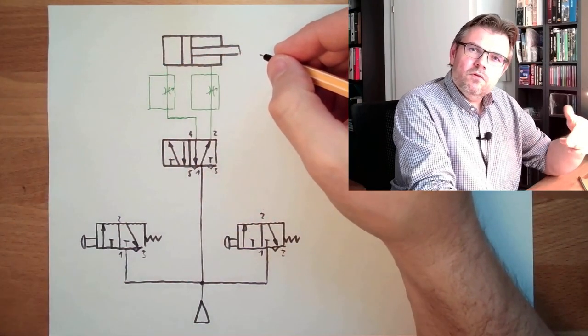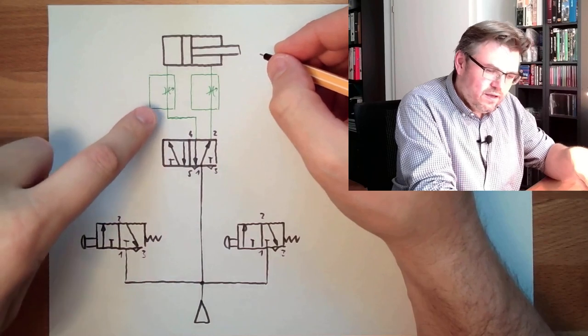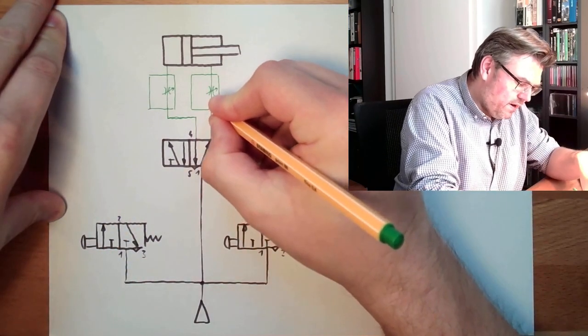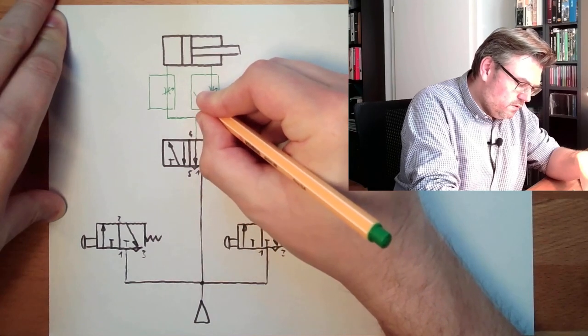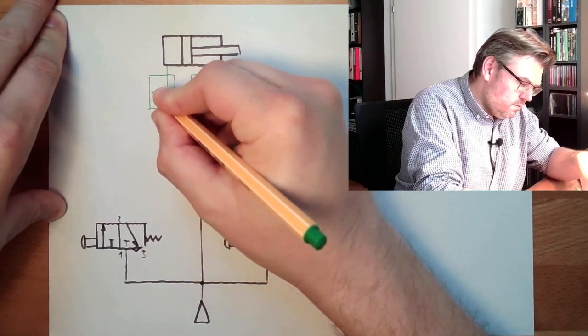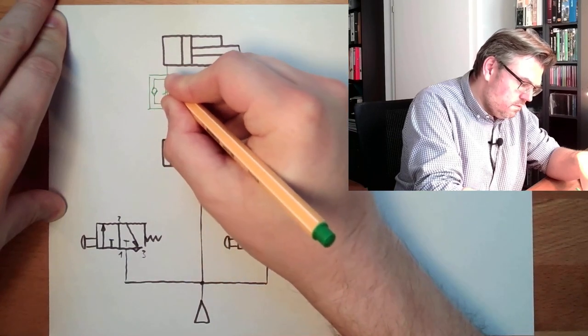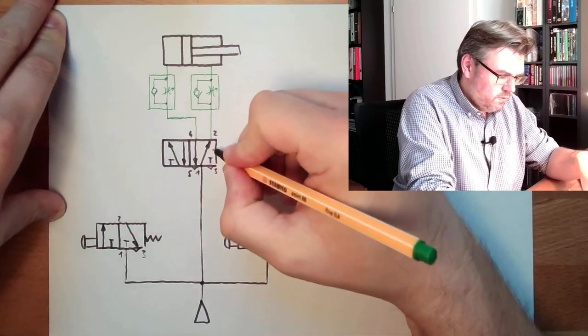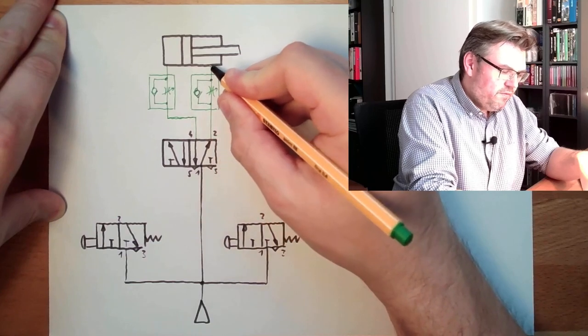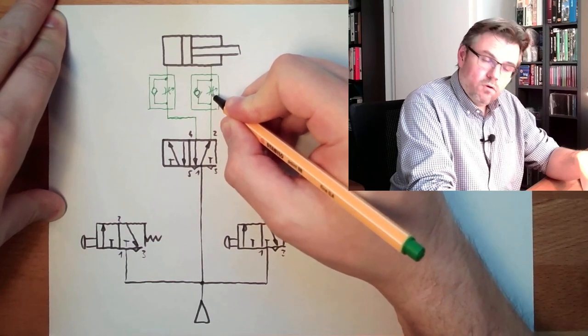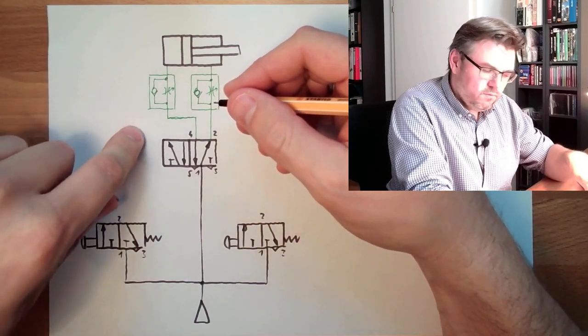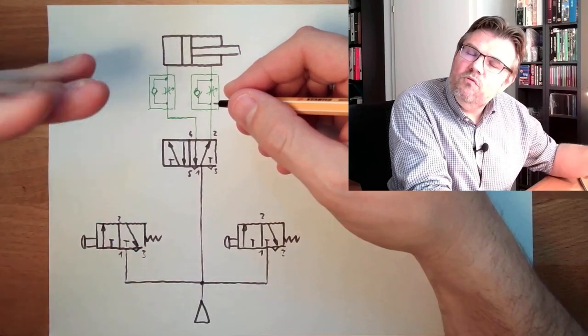And now we said we want to throttle the exhaust air and not the supply air. So if the supply air shall get in without issue, I must draw it that way. So if it's going in, we can pass simply this check valve. If it's going out, we have to go through the throttle valve. So it's exhaust air throttling. We said because then the movement is simply smoother.